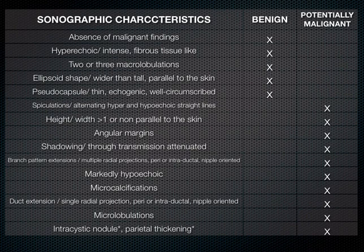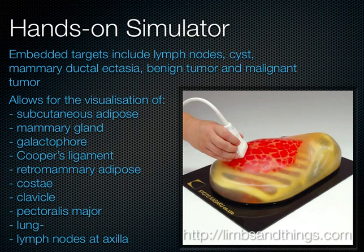You can go back and review the characteristics that make certain masses benign and others more malignant on ultrasound — these are all ultrasound findings. In terms of hands-on practice, ideally a simulator with lymph nodes, cysts, ductal ectasia, tumors, and other findings would be helpful before moving to the real thing. Next, we'll look at two video clips: one on how to perform a breast ultrasound, and another on a breast surgeon performing an ultrasound-guided procedure.